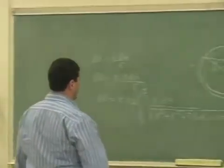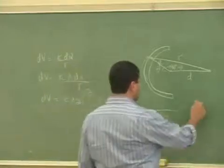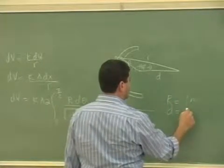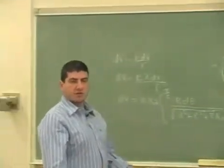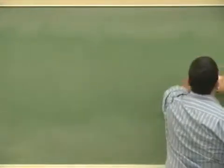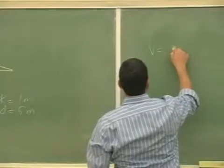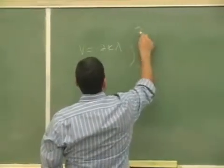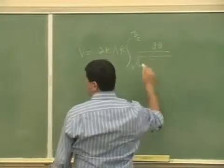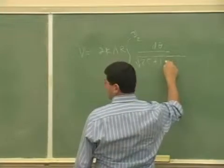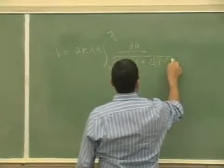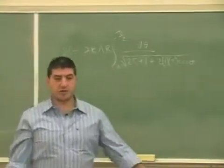If we had numbers — let's say the radius was 1 meter and the distance was 5 meters — then we could get some answer. We could put all of that in here. r comes out of the integral, and d squared is going to be 25 plus r squared is 1 plus 2 times 1 times 5 times cosine theta. You can't do anything else but put it in the TI.